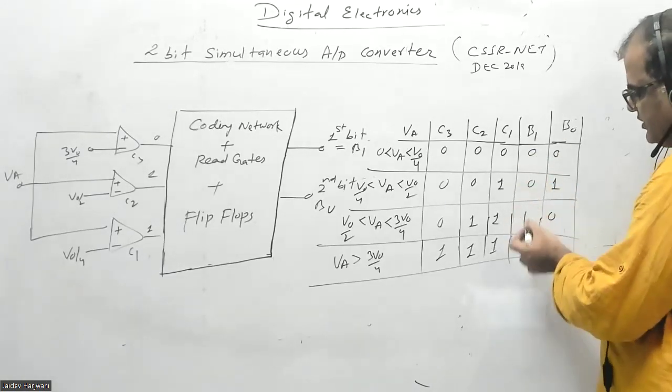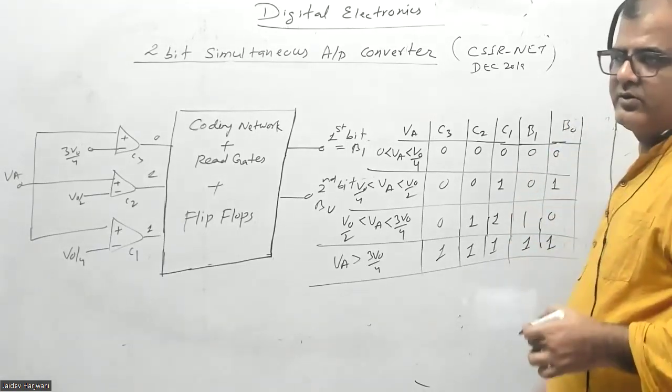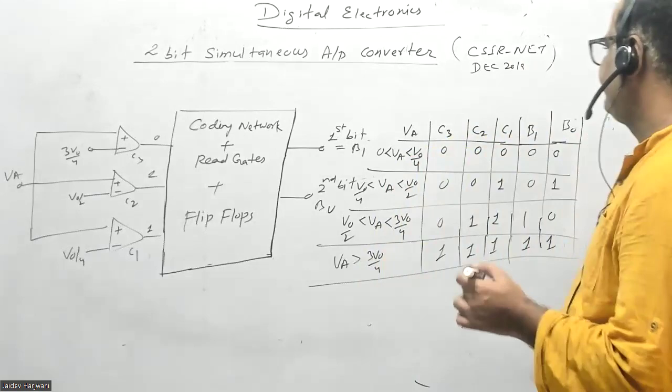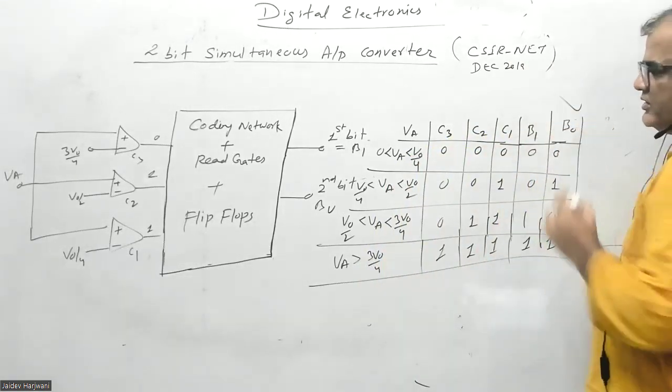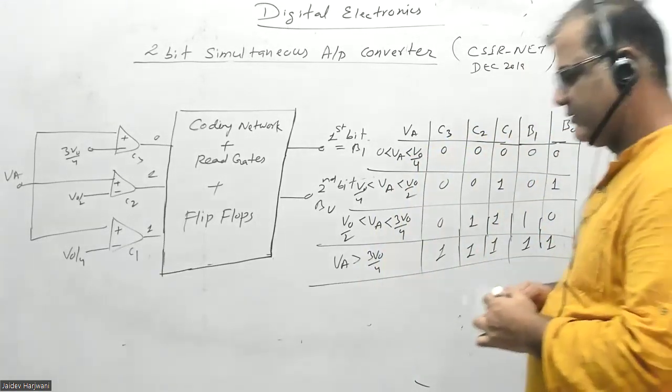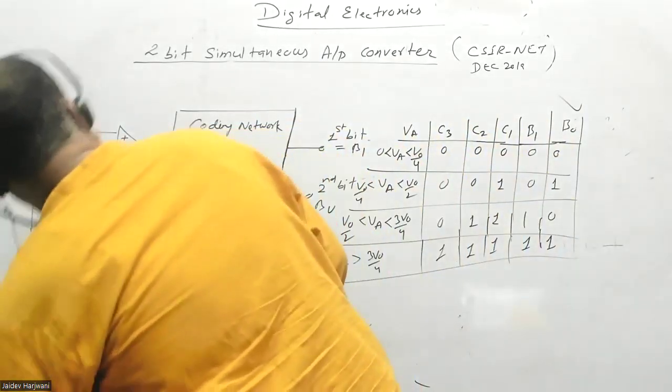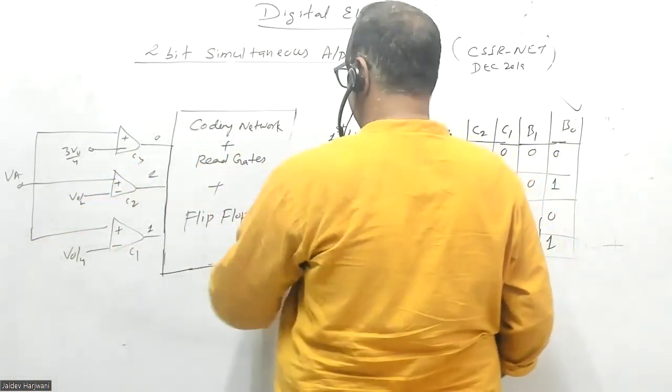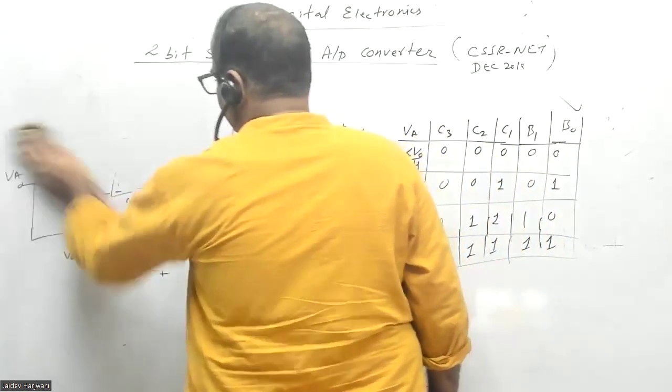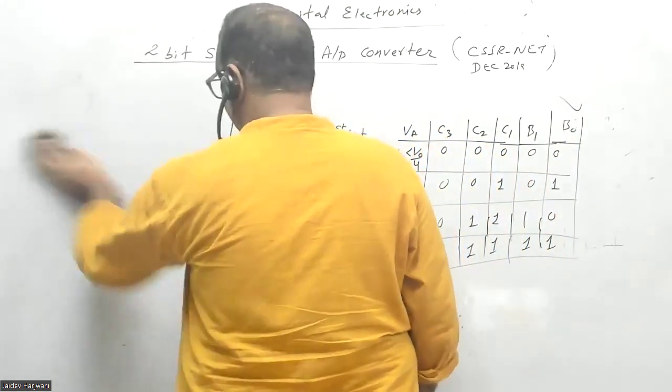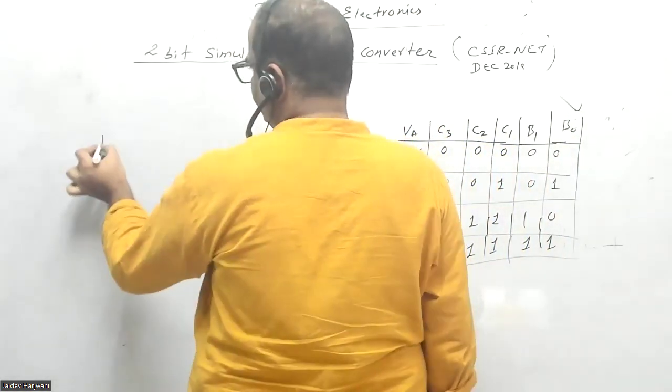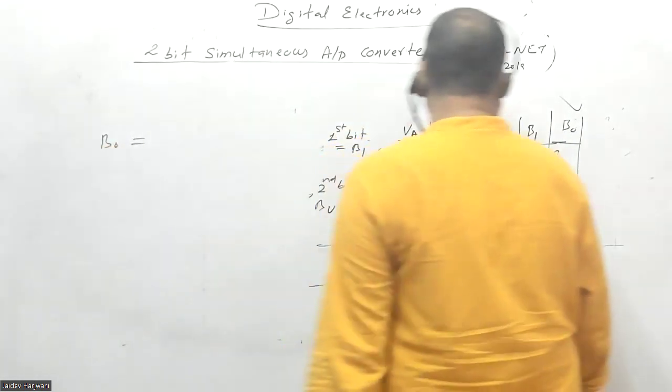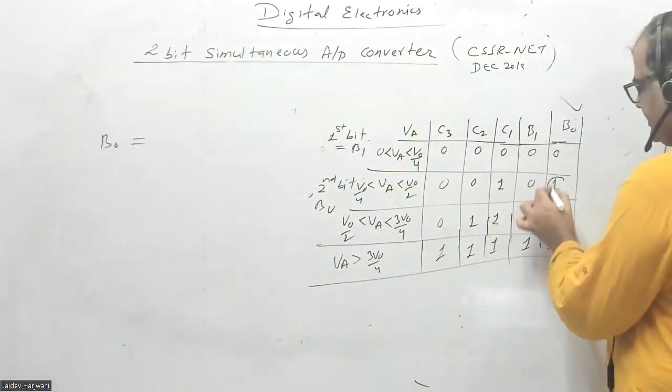Now the question asks: find out the boolean expression for the least significant bit. Let us calculate the least significant bit. Before that, you have to write b0.